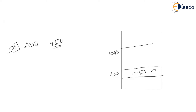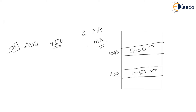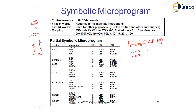In the indirect addressing mode, memory is accessed twice. We go to address 1050, and at 1050 there is the actual operand — say 2000. So in indirect addressing mode, the operand is 2000. In direct addressing mode, the operand is 1050 itself. In indirect mode we require two memory accesses; in direct mode only one.